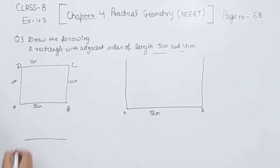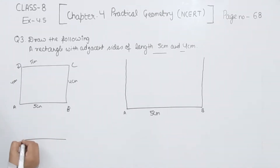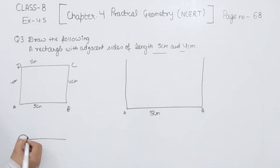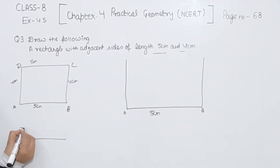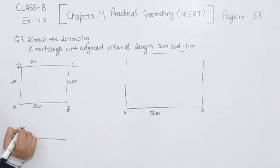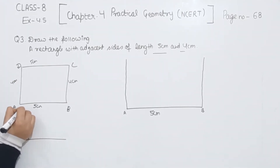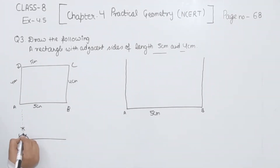Suppose this is the line segment we are having and this is the point. We are going to take any measurement on the compass and draw an arc with this point as the center. With the same measurement, we draw one arc, then using that point as the center we draw one more arc. Now using these two points as centers, we draw two arcs that intersect. This intersecting point we join to get the angle of 90 degrees. This is the way of making a 90-degree angle with the help of a compass.